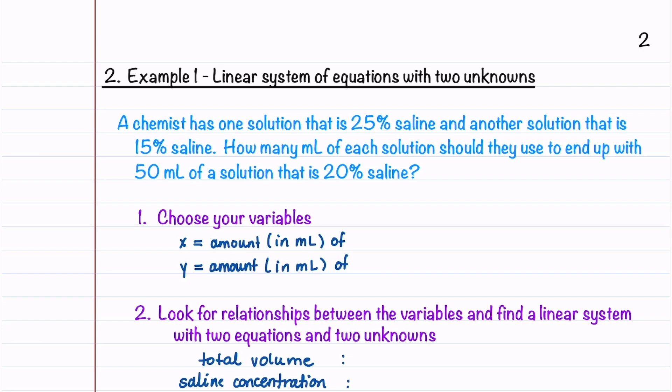In our first example, a chemist has one solution that is 25% saline and another solution that is 15% saline. How many milliliters of each solution should they use to end up with 50 milliliters of a solution that is 20% saline?